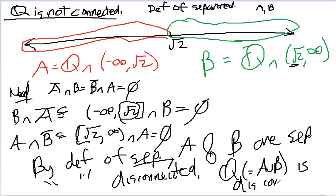Why is it disconnected? Well, because I can write it as A union B where A and B have this nice property where B intersect the closure of A is empty and A intersect the closure of B is empty. So really this is just an application of separated.